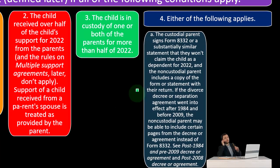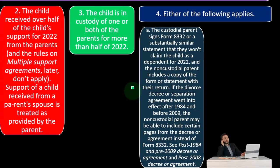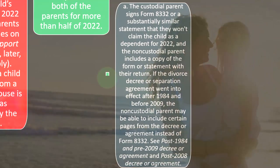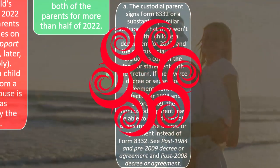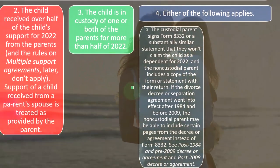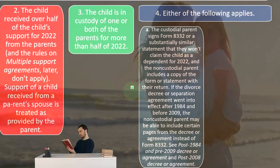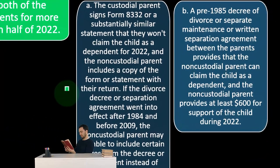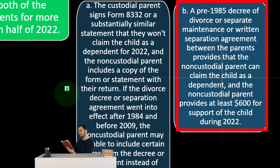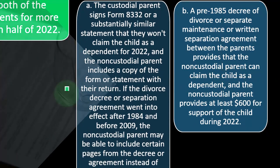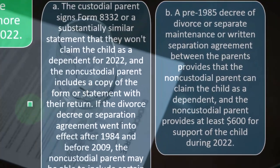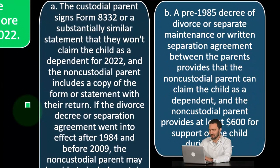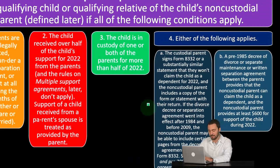You can see the post-1984 and pre-2009 decree or agreement, and post-2008 decree or agreement sections for more information. Somewhat of an unusual situation, but not totally unusual given the current environment. Option B: a pre-1985 decree of divorce or separation maintenance, or written separation agreement between the parents, provides that the non-custodial parent can claim the child as a dependent, and the non-custodial parent provides at least $600 for support of the child during 2022.